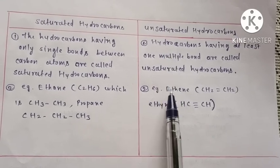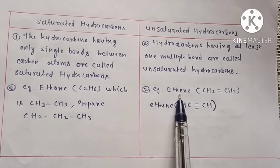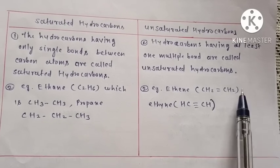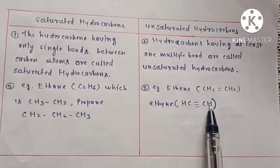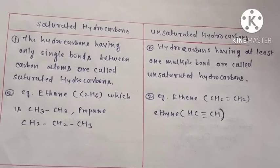Unsaturated hydrocarbons are hydrocarbons having at least one multiple bond, means double bond or triple bond. For example, ethene CH2 double bond CH2, and ethyne CH triple bond CH.